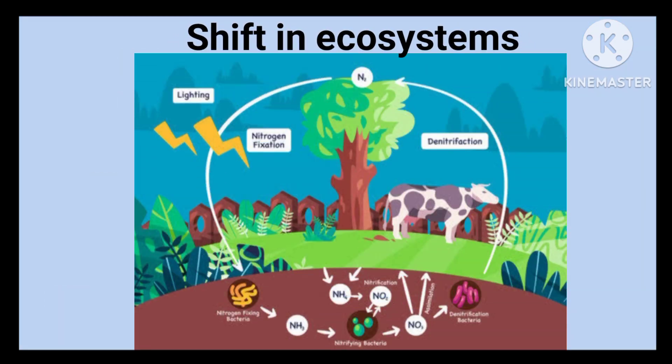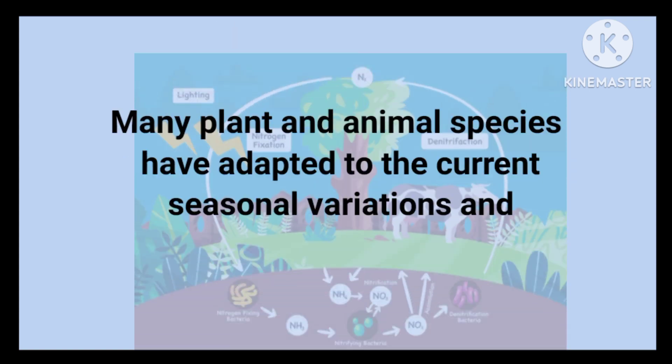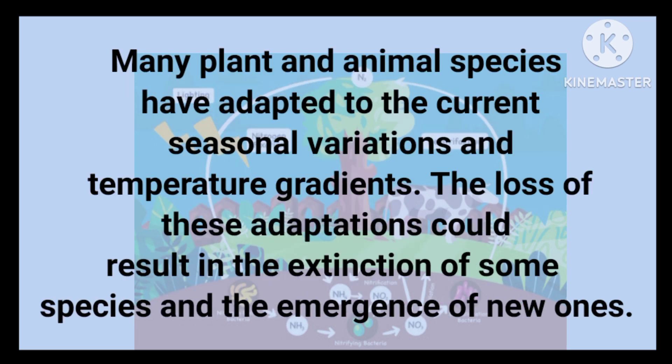The absence of a tilted axis could lead to significant changes in terrestrial and marine ecosystems. Many plant and animal species have adapted to the current seasonal variations in temperature gradients. The loss of these adaptations could result in the extinction of some species and the emergence of new ones.